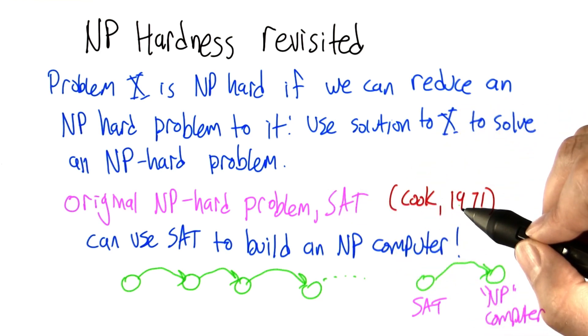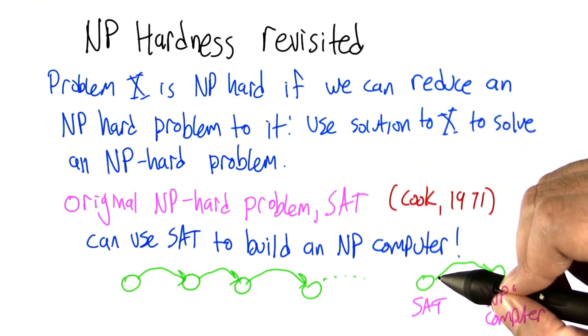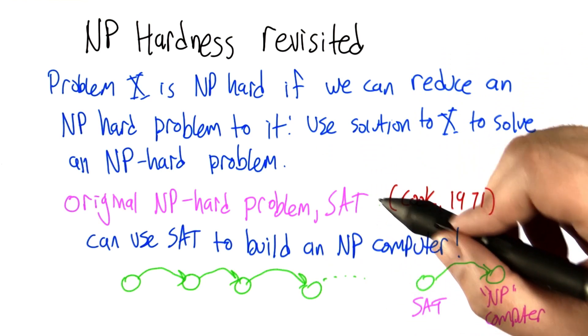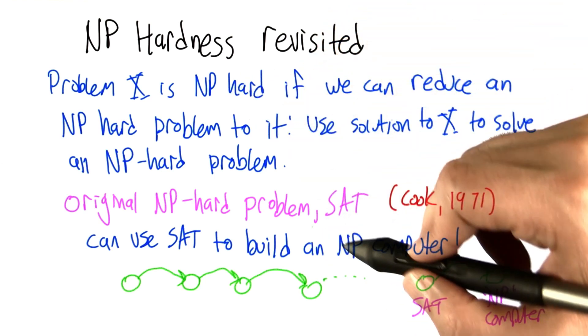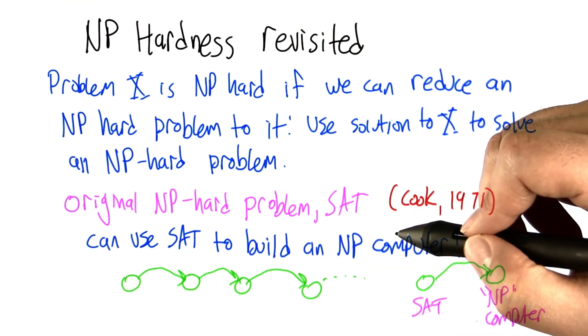So that's great. So Cook got us off the ground here by giving an NP-hard problem, so now we have something else to target. We have some other way if we want to show that some problem is NP-hard, we can just reduce SAT to it and then we're done.